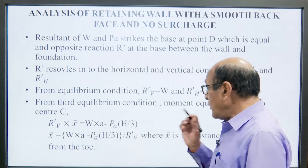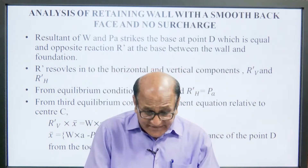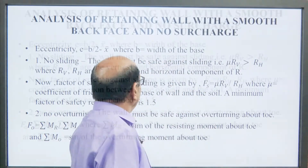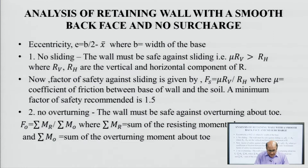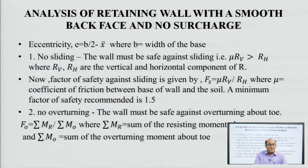The distance x-bar is equal to (W × A − PA × h/3) divided by R'v, where x is the distance of point D from the toe. The eccentricity E equals B/2 minus x-bar, where B is the width of the base. In the equilibrium condition, R'v equals W and R'h equals the active pressure.